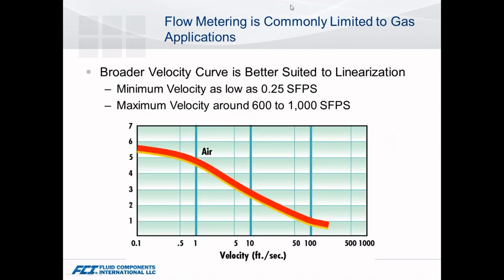When you look at gas compared to a liquid, the previous slides showed liquid limited to about five feet per second as a maximum velocity. With gases, that smaller cooling effect due to thermal conductivity allows us to get ranges much higher — roughly 200 actual feet per second, equating to calibrations in the 600 to 1,000 range. One area that really benefits from thermal is being able to go very low in flow — that quarter foot per second is barely moving flow.